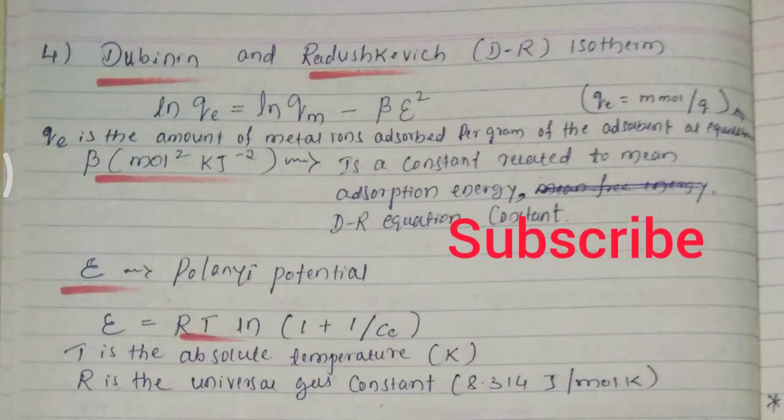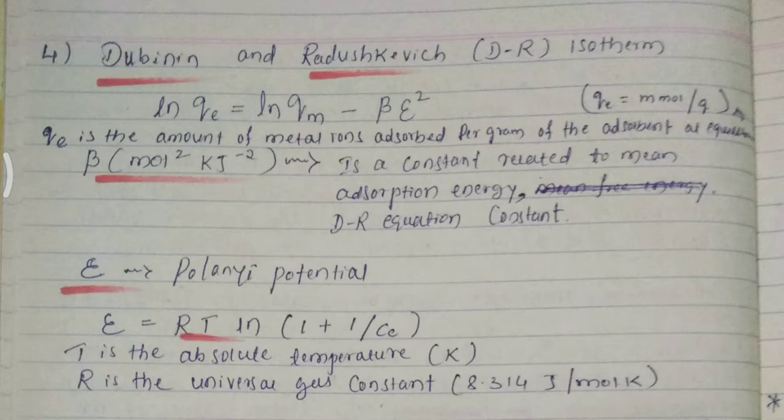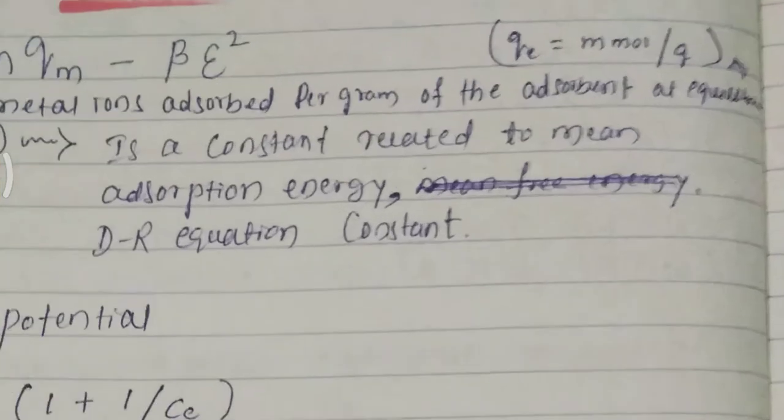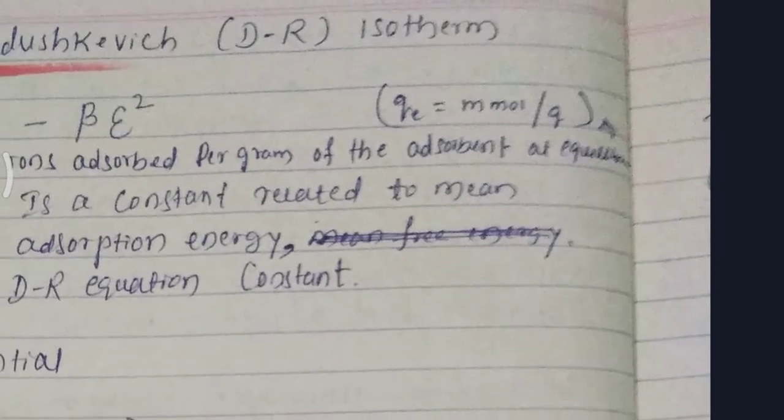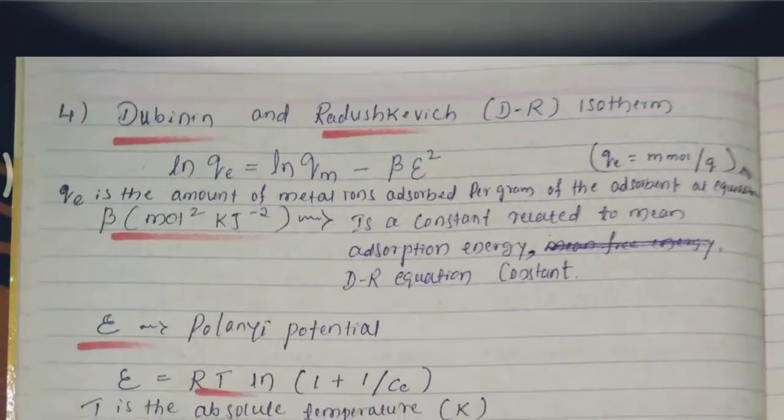Morning friends, today we discuss the DR isotherm. The formula will be ln qv equal to ln qm minus beta epsilon square, where qv has the unit millimolar per gram.